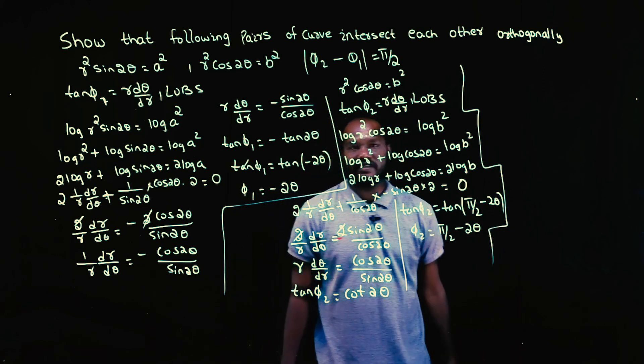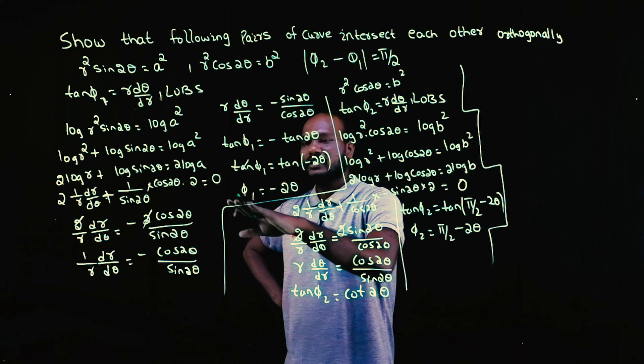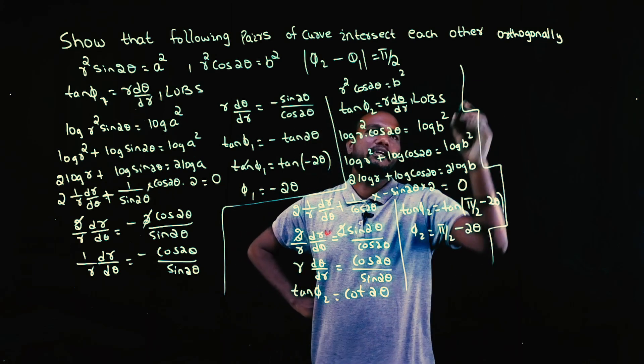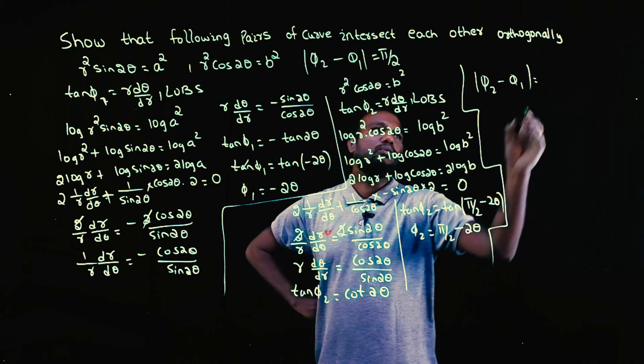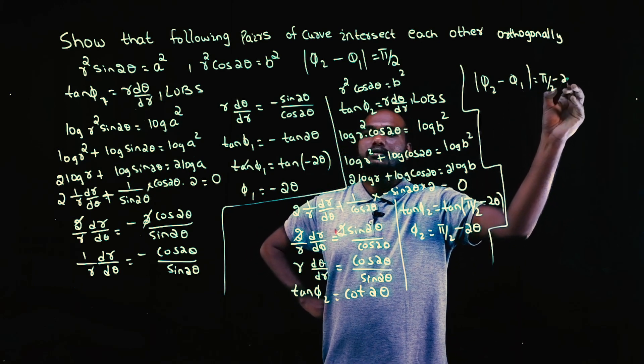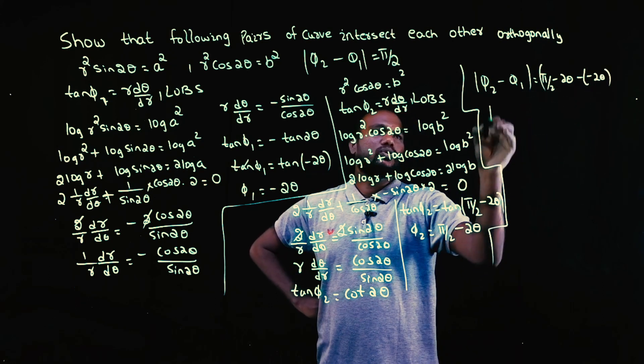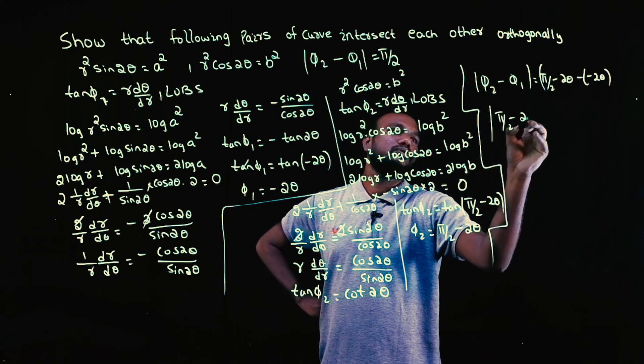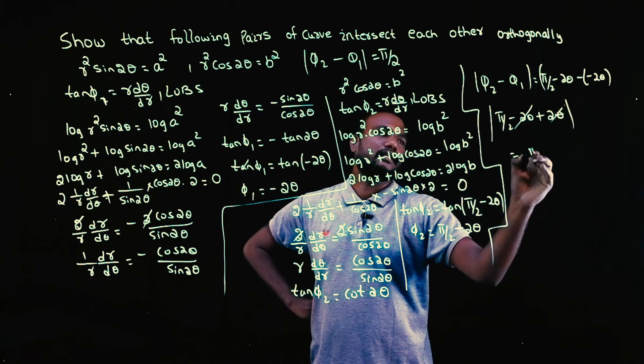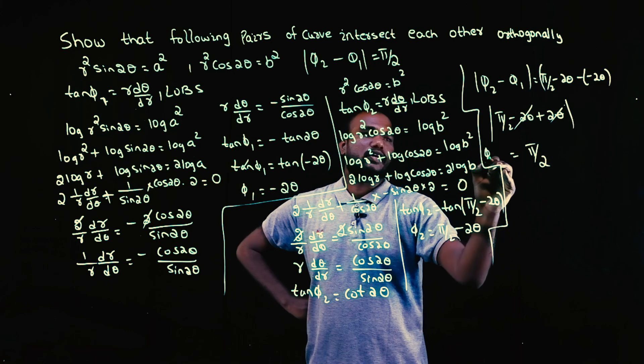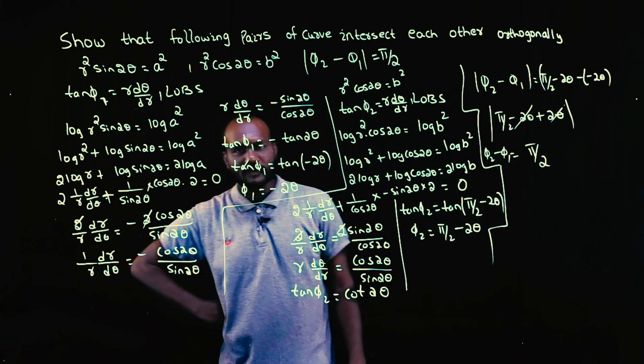Neither am I interested in φ1 nor φ2. I am interested in φ2 minus φ1. So this will become what? π by 2 minus 2θ minus of minus 2θ. So I'll just write π by 2 minus 2θ plus 2θ. Right, minus 2θ plus 2θ gets cancelled. I'll be left with π by 2. φ2 minus φ1 value is π by 2, which is what the question was asking. Yes.